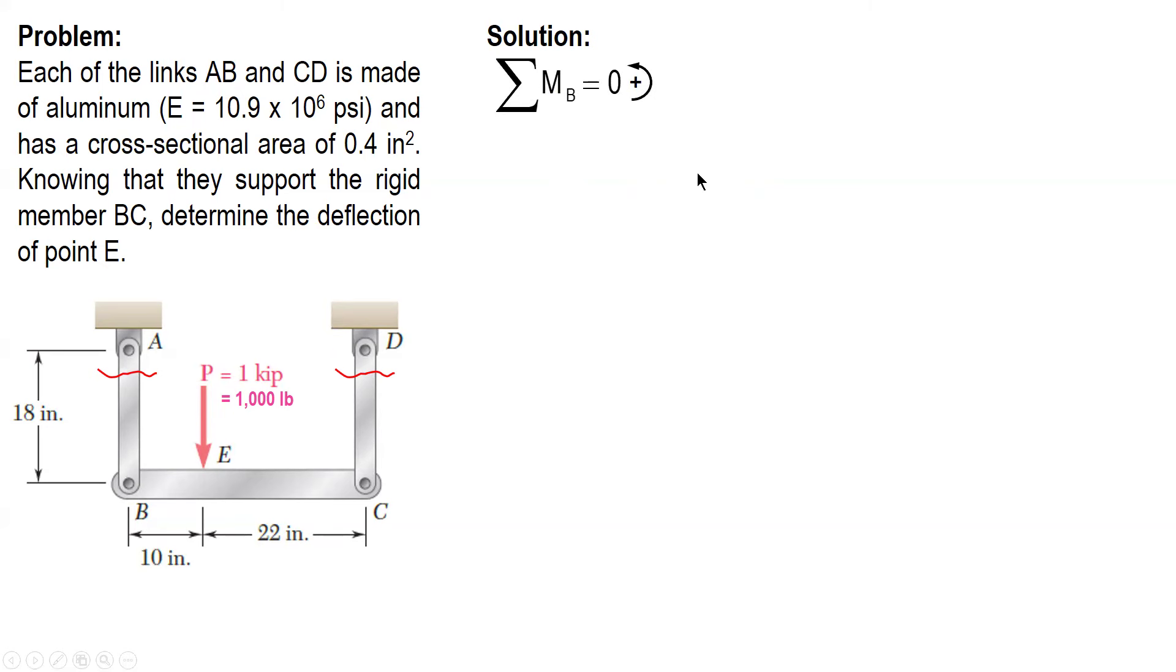Let's sum up moment about B. So the force at B is upward. And the equation is: F_CD times 32 minus 1,000 times 10 equals zero. And the result is 312.5 pounds.